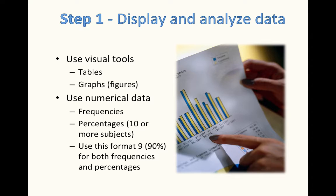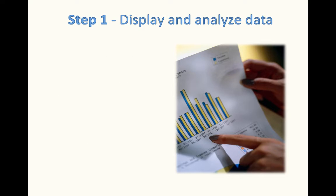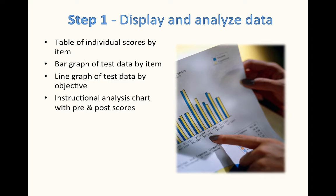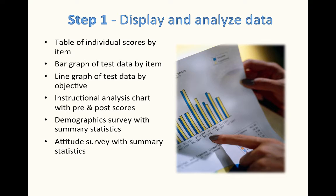You can use frequencies or percentages for 10 or more subjects. It's good to use this format for both frequencies and percentages together — 9 is the number of people and the percentage is 90. I'm going to go through the following figures and tables: the table of individual scores by item, a bar graph of test data by item, a line graph of test data by objective, an instructional analysis chart with pre- and post-test scores, a demographic survey with summary statistics, an attitude survey with summary statistics, and a table of revisions by component.